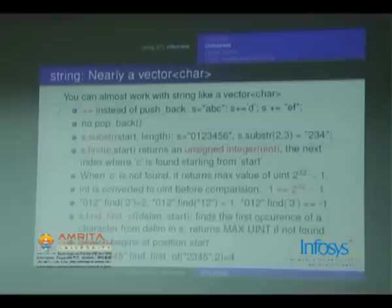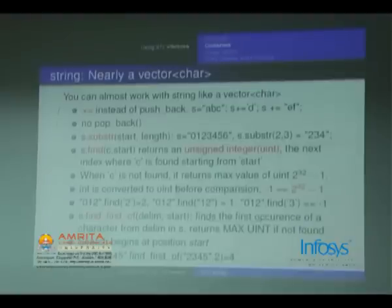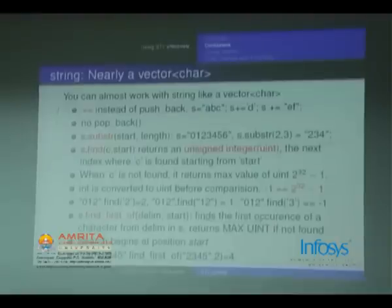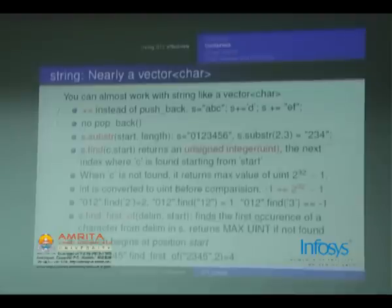s.substr(start, length) returns a string — so s.substr(2, 3) returns the string starting at position 2 of length 3, i.e., characters at positions 2, 3, and 4. s.find(c, start) finds the next index where c is found starting from position start.